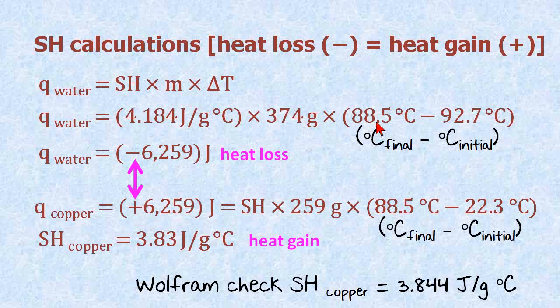Its final temperature, which is the same for the water and the copper, is 88.5. And its initial temperature was as close as I could get it to boiling. By the time I poured it in, it was 92.7 degrees C. When we calculate this out, it turns out to be a negative number. That means it's a heat loss, which is 6,259 joules.